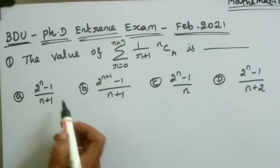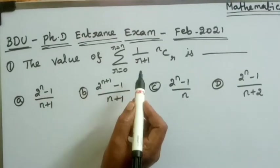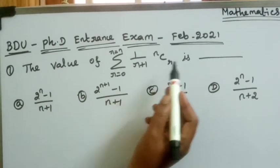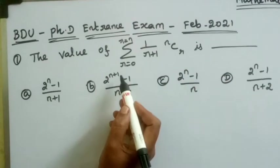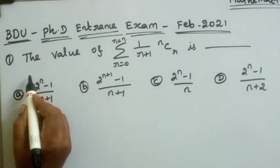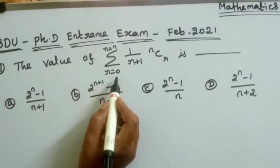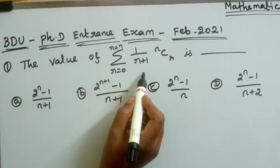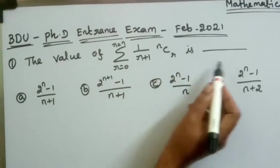Good morning students. We are going to talk about the PhD NNS exam and discuss the value of the summation R equal to 0 to N of 1 by R plus 1 into NCR.